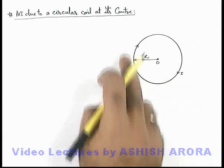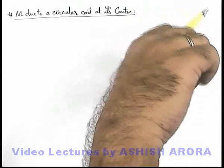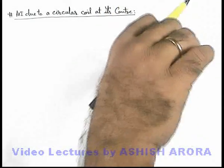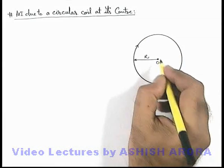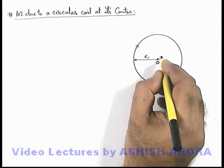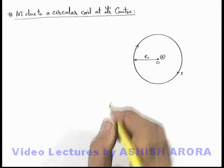Here it is carrying a current in clockwise direction, so if I curl my fingers along the clockwise direction, my thumb will point in inward direction. So at center or at every interior point in its plane, magnetic induction will be in inward direction.